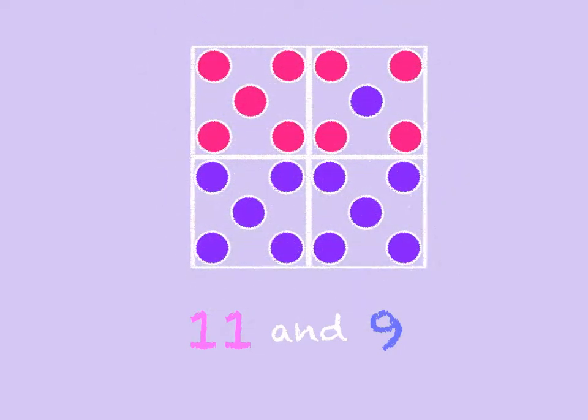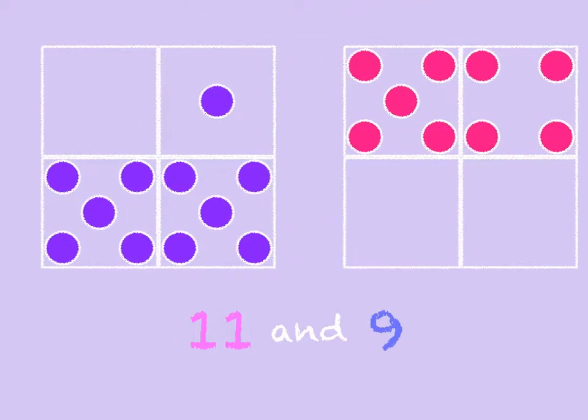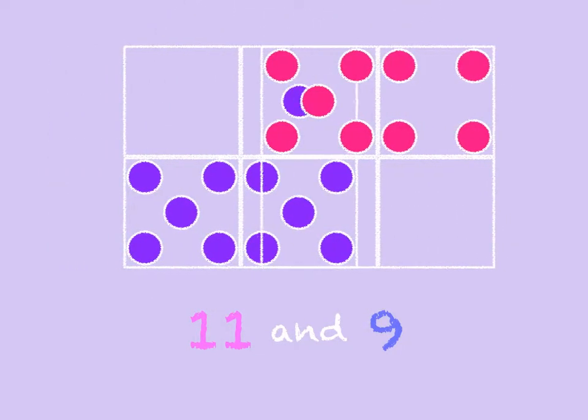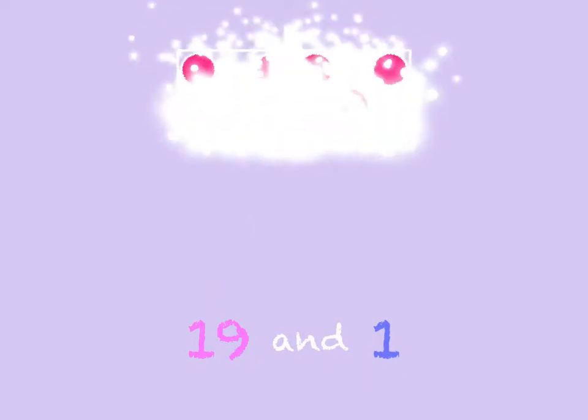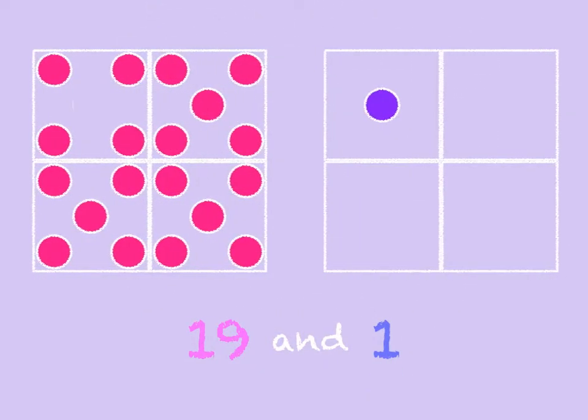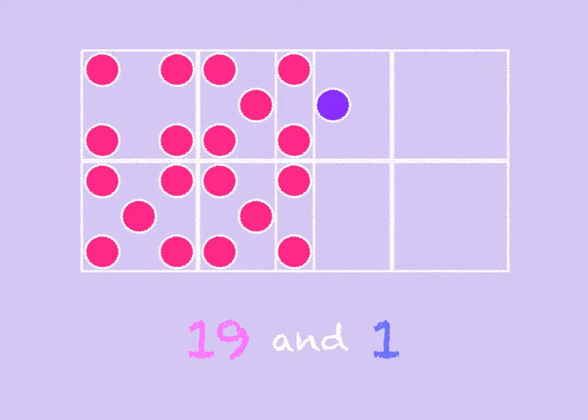Eleven and nine. Eleven and nine make 20. Nineteen and one. Nineteen and one make 20.